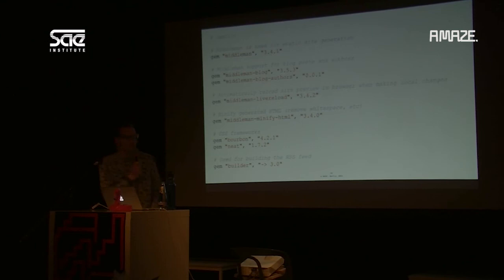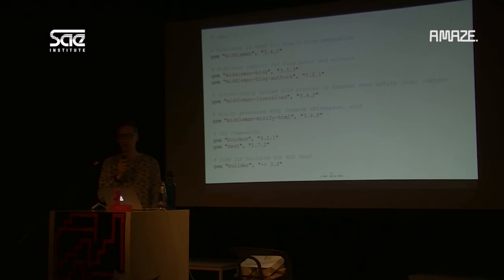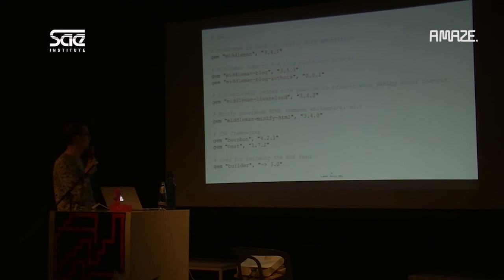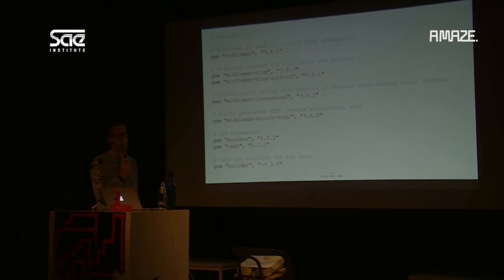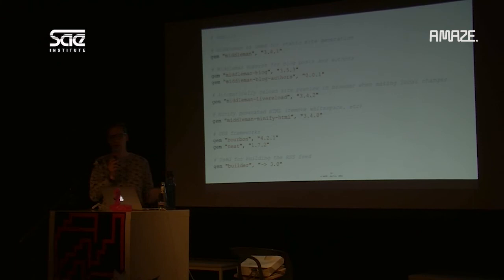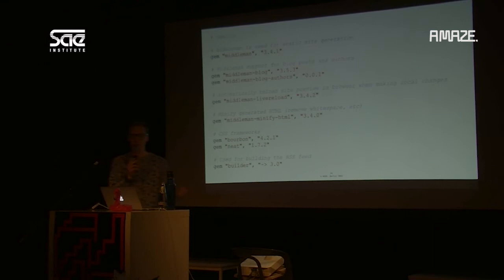Let's look at some code. We use Middleman for our websites, which is a Ruby open source framework. In Ruby, you have a gem file that specifies what libraries and versions you're using. We use Middleman and also a thing called Live Reload. With Live Reload, you can make changes in your code and preview it locally in your browser — when you save a file, it detects the change and reloads the browser automatically. You don't have to press reload manually, which is really nice especially for CSS changes. It makes your workflow much faster.